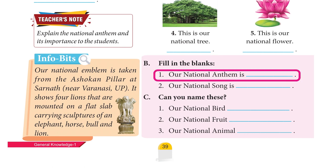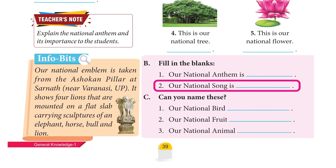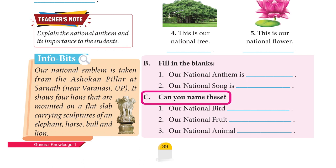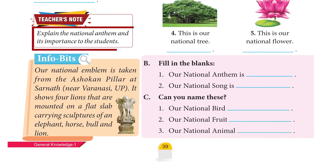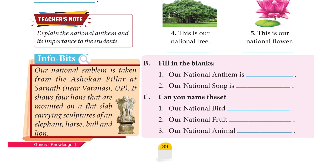Fill in the blanks: our national anthem is Jana Gana Mana; our national song is Vande Mataram. Our national bird — Peacock; our national fruit — Mango; our national animal — Tiger. Info Bits: Our national emblem is taken from the Ashokan pillar at Sarnath, Varanasi. It shows four lions mounted on a flat slab carrying sculptures of an elephant, horse, bull, and lion.